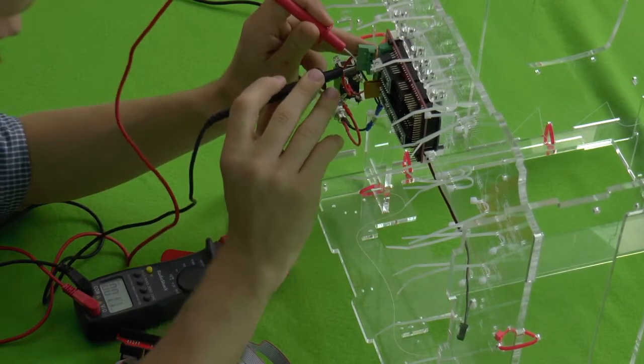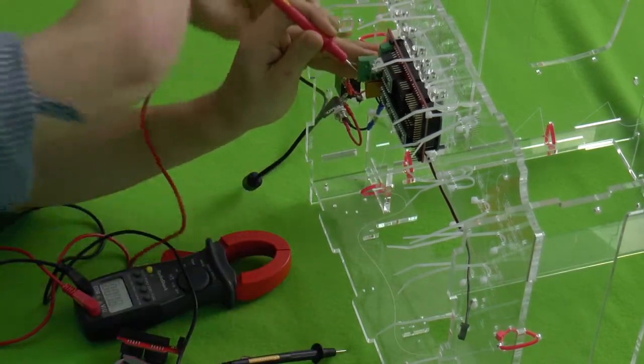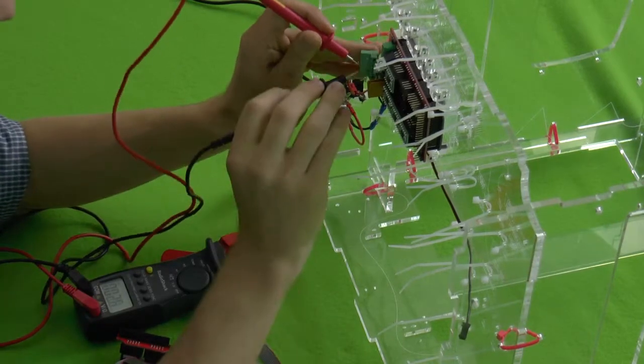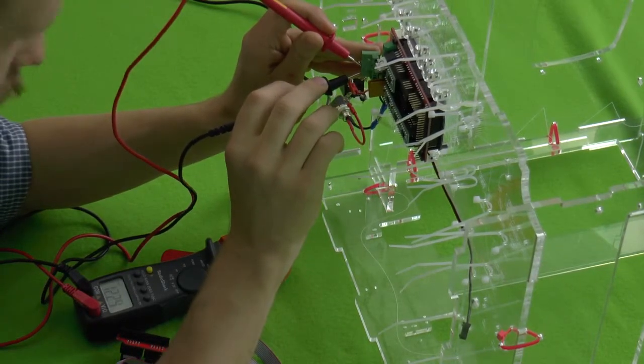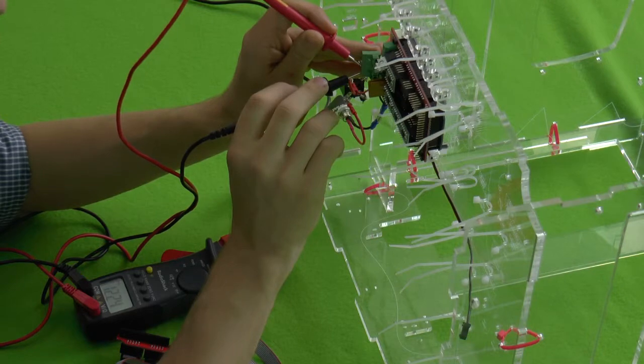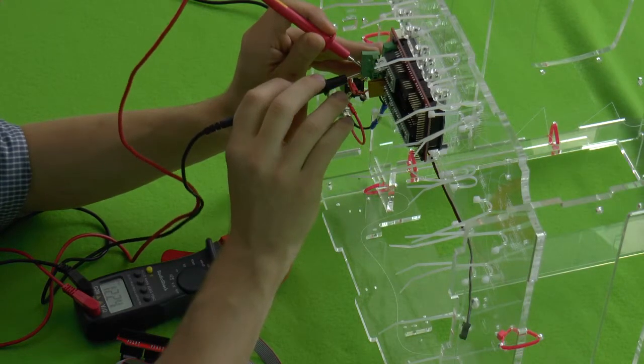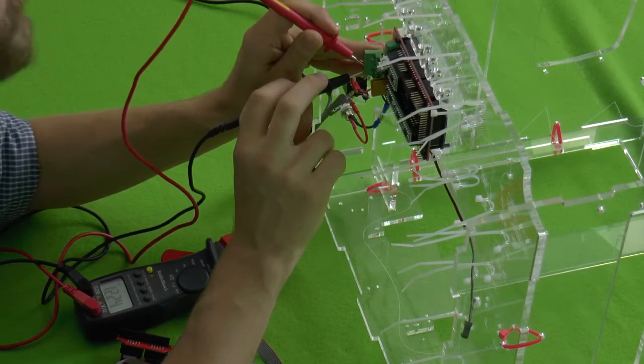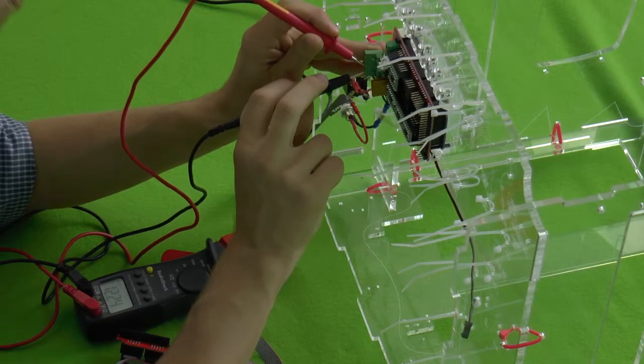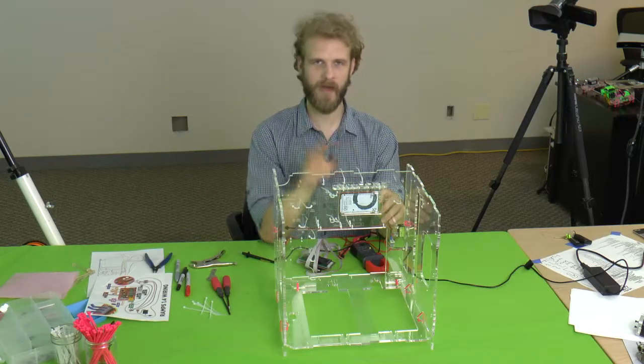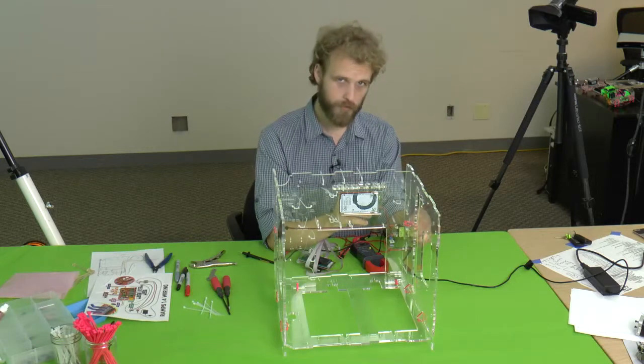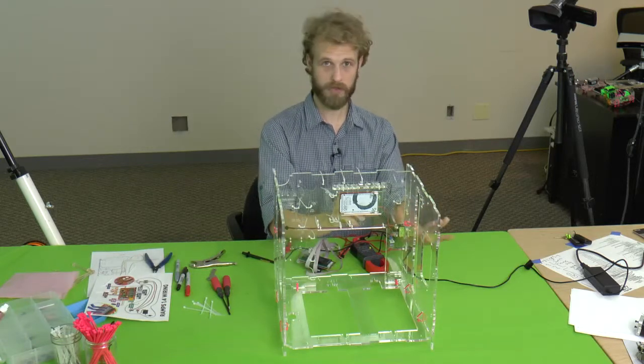With your multimeter, put red on plus, which will be the second from the bottom hole, and black on minus. And you should be getting, after you turn the printer on, you should be getting 12 point something volts with no weird sign. If it says minus 12 volts you did something wrong and you need to fix it. I'm all good. Plus is where it should be, minus is where it should be. Now let's turn the printer off in the bottom position.